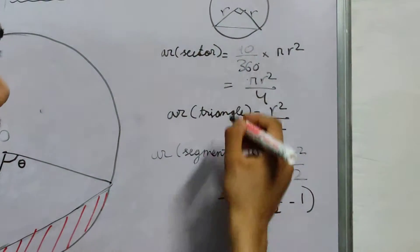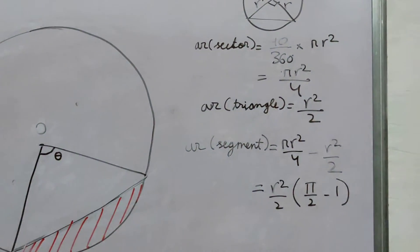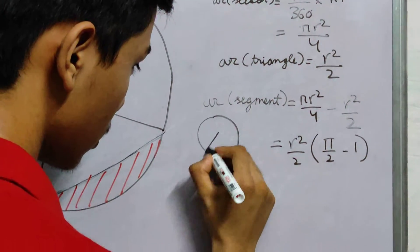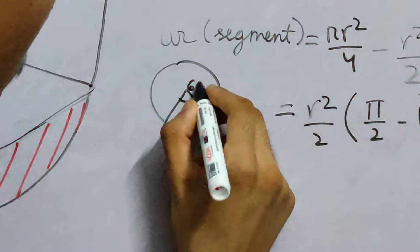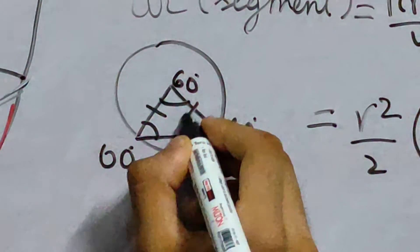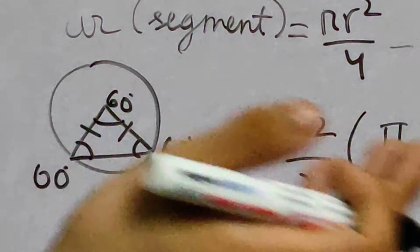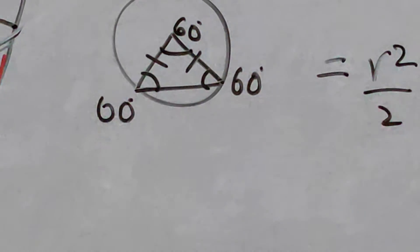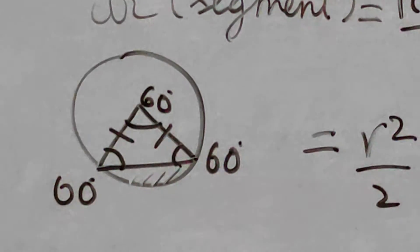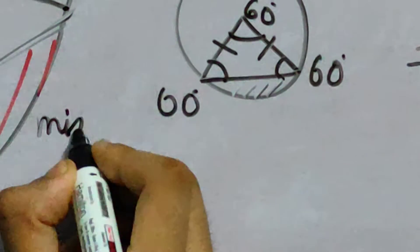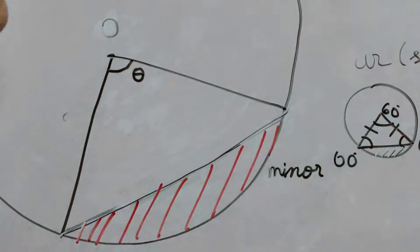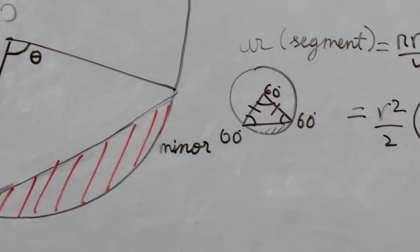Another special case: if the central angle is 60 degrees, the two radii are equal, making an equilateral triangle. You can use the area of an equilateral triangle to solve for the segment. The smaller region is called the minor segment and the larger part is the major segment. But these are not the general cases.